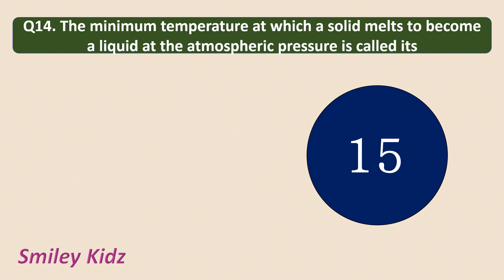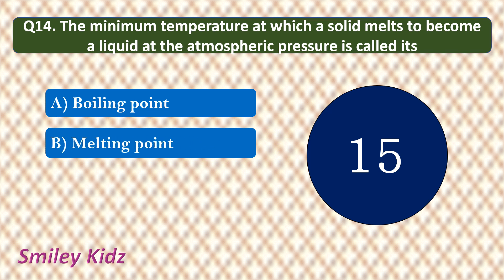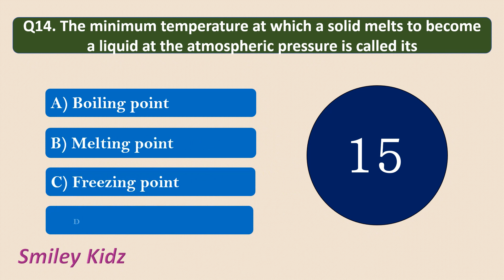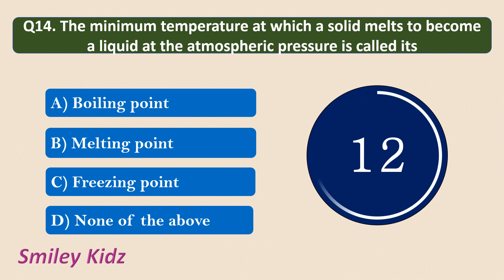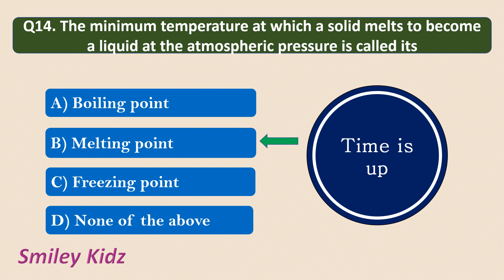Question number 14. The minimum temperature at which a solid melts to become a liquid at atmospheric pressure is called its? Options are: boiling point, melting point, freezing point, or none of the above. The correct answer is melting point. The minimum temperature at which a solid melts to become a liquid is called the melting point.